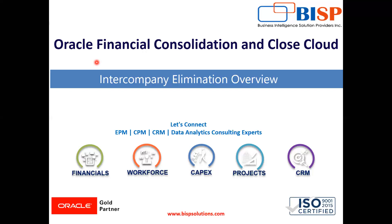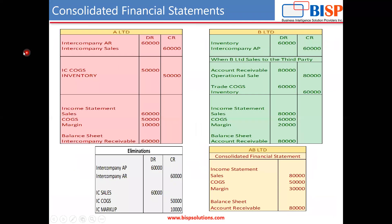I have created a scenario on the basis of which we are going to input our numbers within the application and we will see the numbers coming at the consolidated entity level. We have two entities: Legal Entity A and Legal Entity B. Legal Entity A had a receivable of 60,000 from Legal Entity B and had made a sale to Legal Entity B of 60,000.